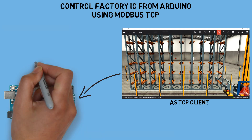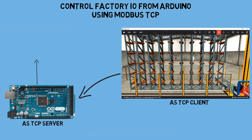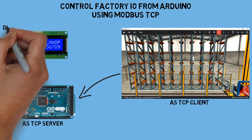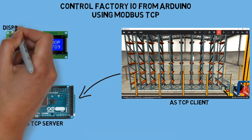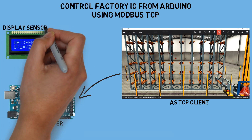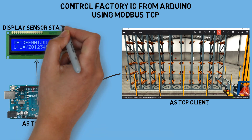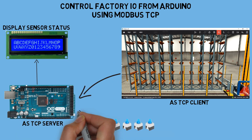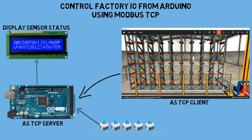To display the status of sensors in Factory IO, I use an LCD display. And I use some buttons to control the actuators in Factory IO.